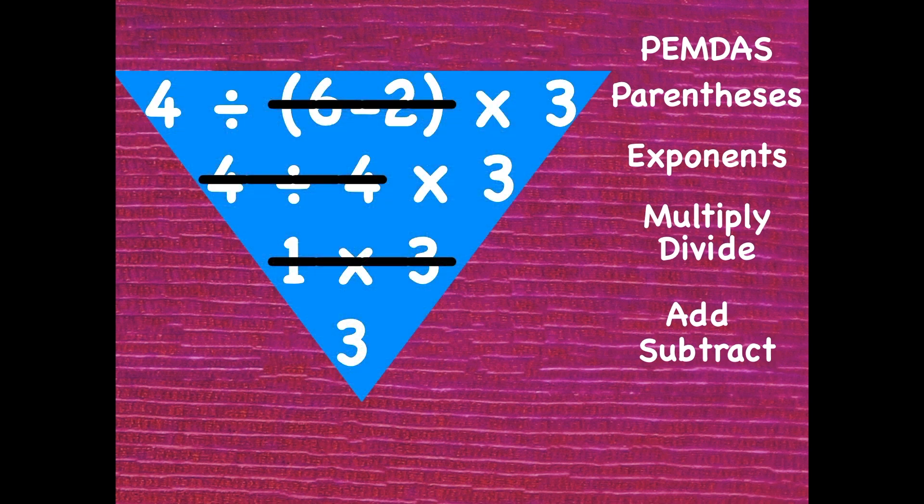You should end up with this sort of upside down triangle where your expression starts out long and gets smaller and smaller and smaller until you get to this single number value for your answer. You're going to simplify it from all of that down to one number. 4 divided by parenthesis 6 minus 2 parenthesis times 3 is just a long drawn out way of saying 3. That long expression has a value of just 3.